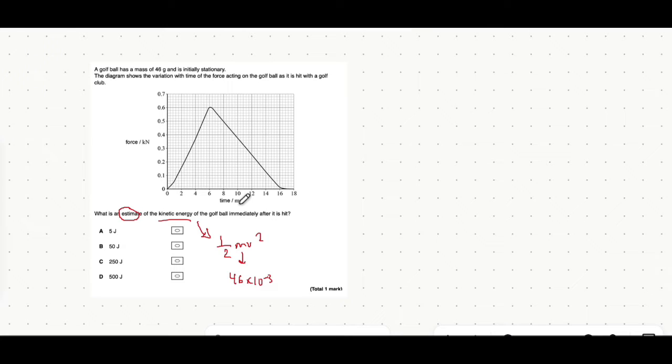How do we get the velocity from a force-time graph? Well, the area under a force-time graph gives you a variable called impulse. That would be force multiplied by time. Impulse itself is equal to the change in momentum, which is mass times velocity.